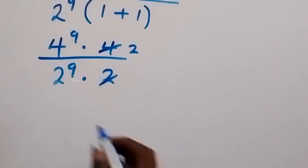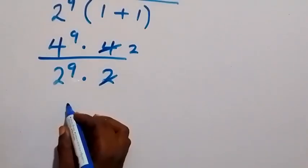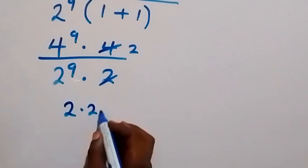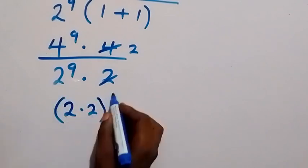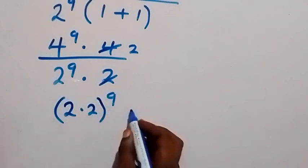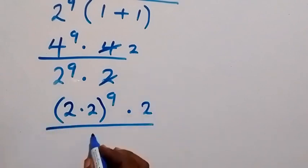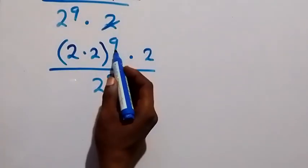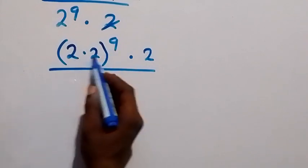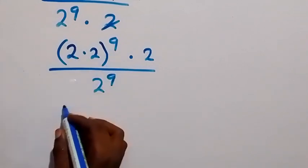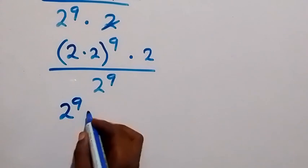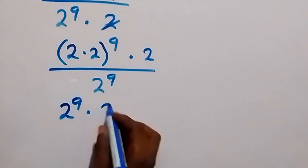We now have 4 raised to power 9, which we can also write as 2 times 2, that's 4, raised to power 9, then times this 2, divided by 2 raised to power 9. From the law of indices, the power of 9 affects both numbers, giving us 2 raised to power 9 times 2 raised to power 9.